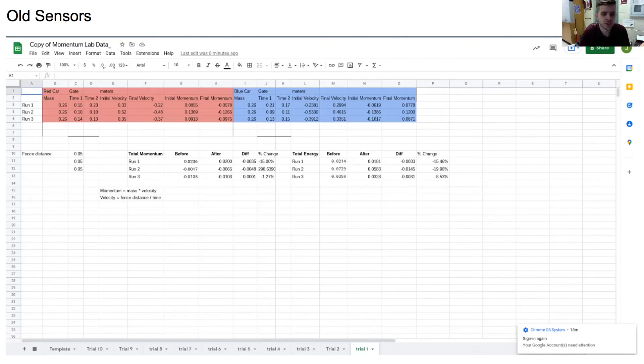So if you look at the percent change of this, it's negative 15%, which isn't terrible, but then it jumps up to 290%. And then it jumps back down to negative 1%. So the findings are super inconsistent, they're jumping around, the percent changes are constantly different. So that's with the old sensors.